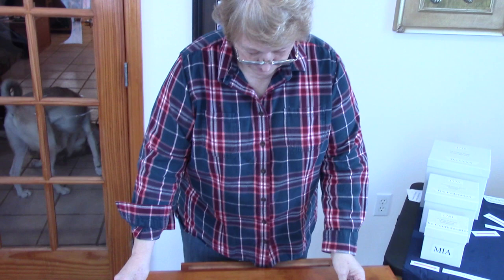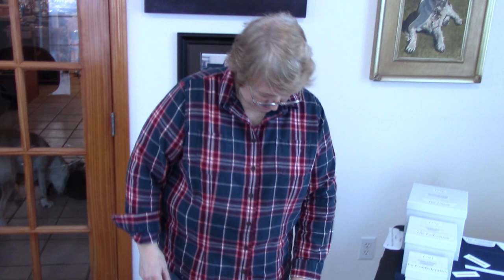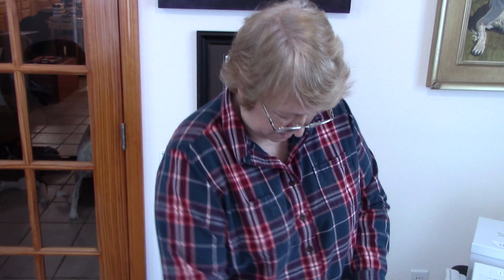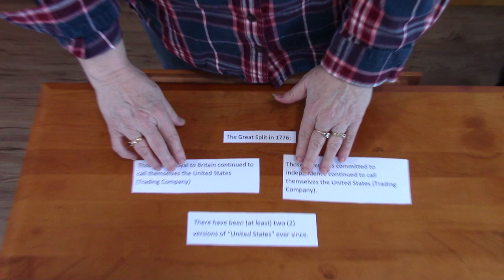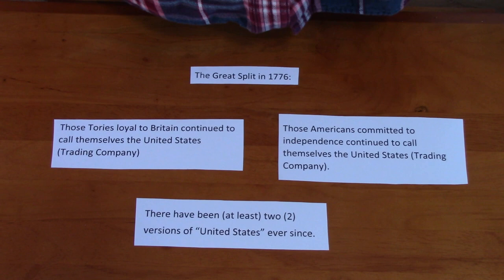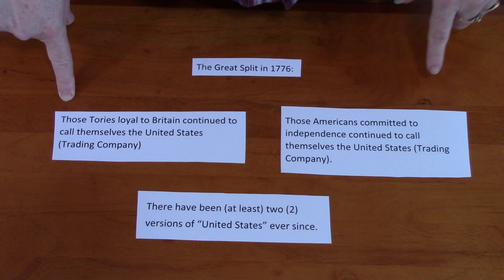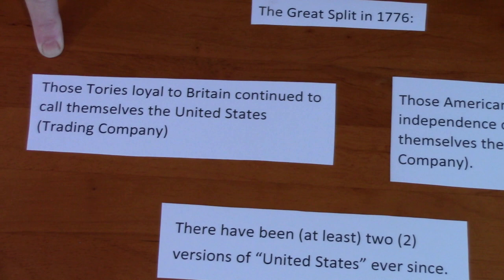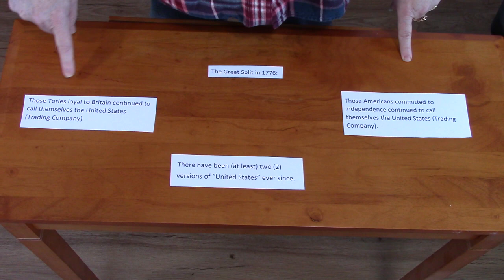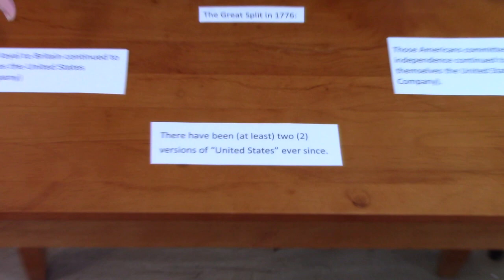So then we come to what I call the Great Split. What happened was that the War of Independence took place, and the investors in the group had to make a choice about which side they supported. So in 1776 you wound up with the Tories who supported the British and the Americans who were committed to freedom splitting off into two separate groups — and each one continued to call itself the United States.